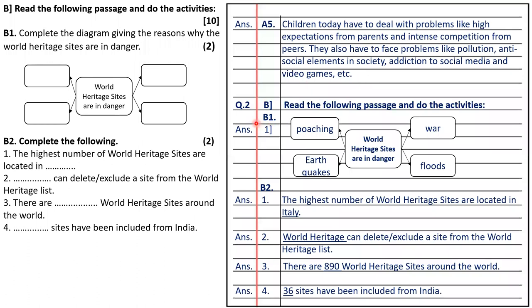Let's move to the second question, question 2B. Here, complete the following web diagram. World heritage sites are in danger because of poaching, earthquakes, war, and flood.